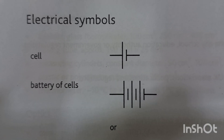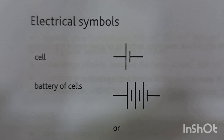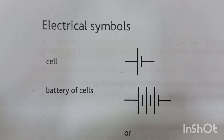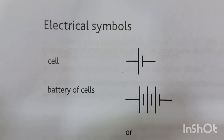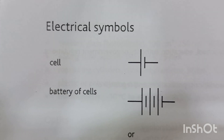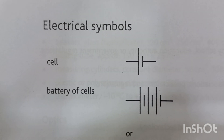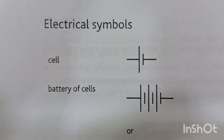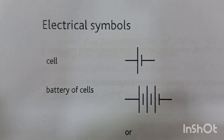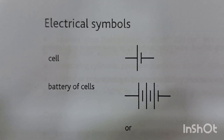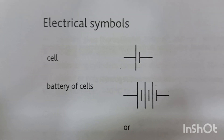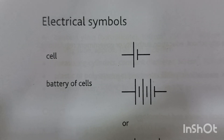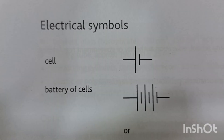Good morning dear students, my name is Farhan Mazhar and the subject today we are studying is Cambridge O Levels Physics 5054. In this video we are going to talk about the electrical symbols which are used in electric circuits — those electrical components and electric symbols which are used in different circuits in our syllabus.